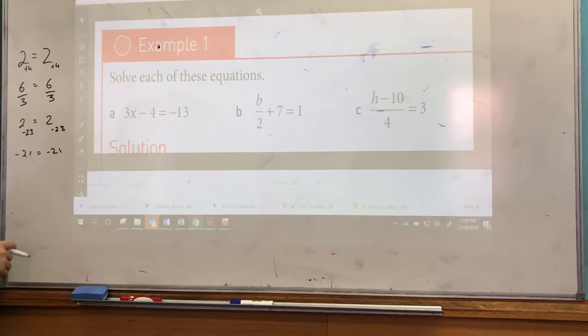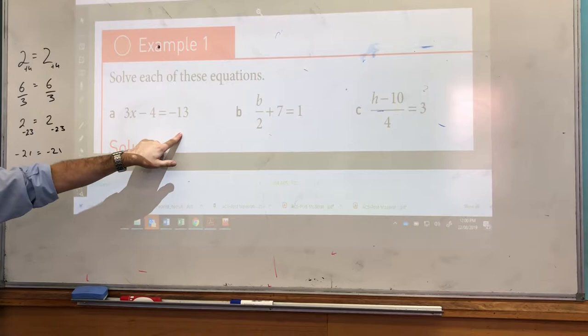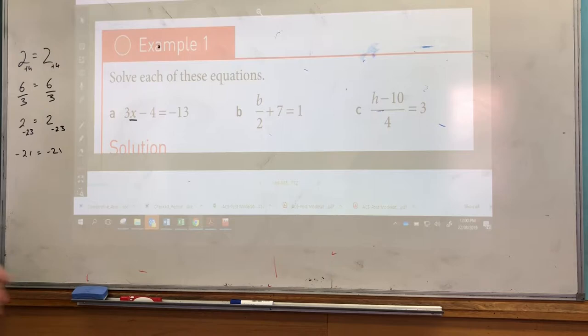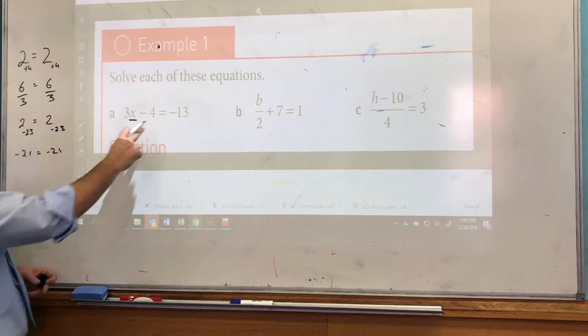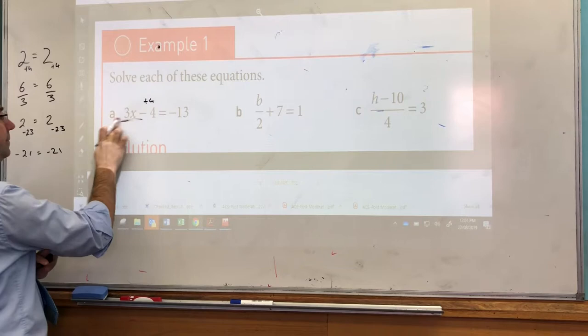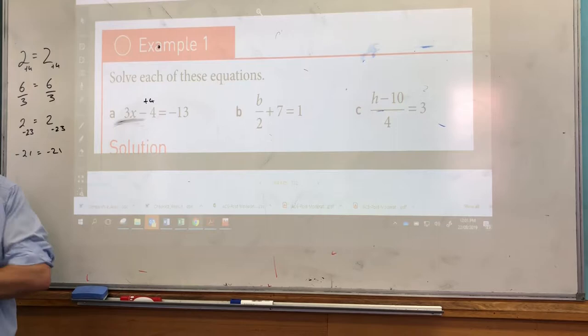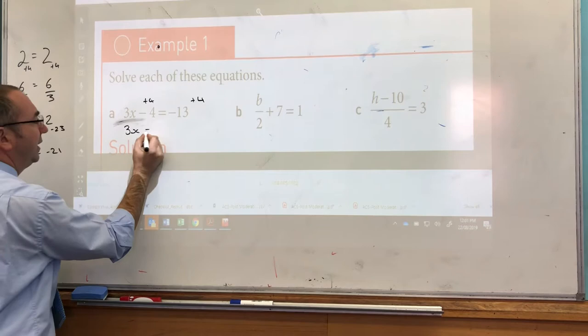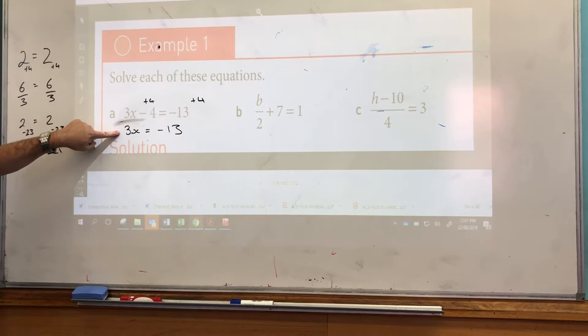Okay, so let's have a look at this first one. We have 3x minus 4 equals minus 13. Now, what your aim is, is to make the algebraic term the subject, which in layman's terms means get it by itself. So to get 3x by itself, to get rid of the minus 4, we would add 4. So if I added 4 here, minus 4 plus 4 equals 0, it's going to disappear because 0 is nothing. But we add 4 to one side, so we've got to add 4 to the other side. So that gives us 3x minus 4 plus 4 equals 0. So just 3x, we've achieved making x the subject, equals minus 13.